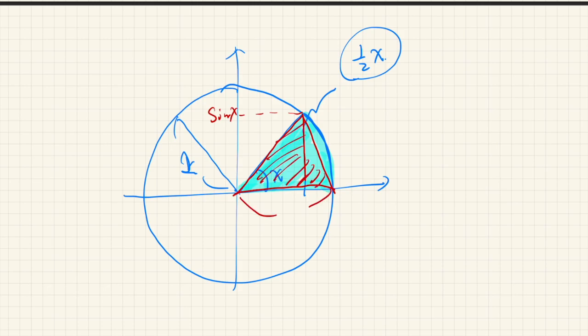What about the area of this red triangle? Since the base is 1 and the height is sine x, this is given by 1 over 2 times sine x. And obviously, this red triangle is completely buried in this fan-shaped area. So that means this is less than or equal to 1 over 2 x.